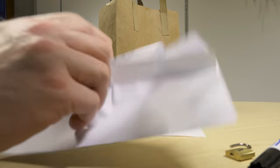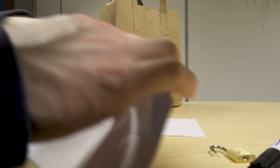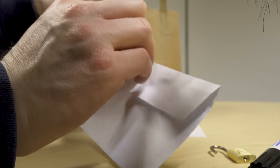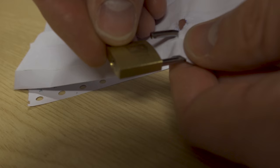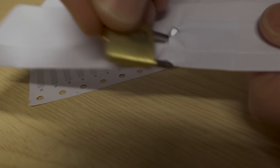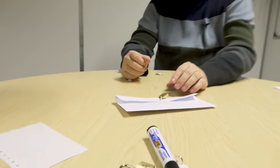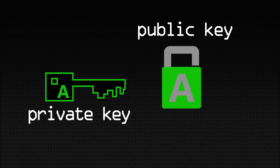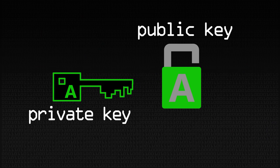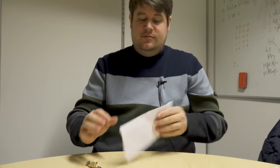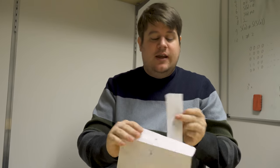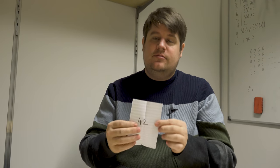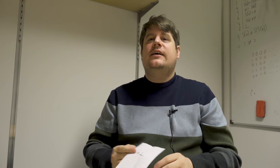I put it into the envelope. The point is that I can lock this without having the key — I don't need the key to lock it, it's locked. And then I can hand it back to you. So you just sent me a message which nobody else can read but me, because the only way to read it is to open this little lock, and there's only one key in the world that can open it. I've never given this key to anyone else, so I can now open the envelope and read your message.